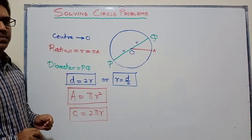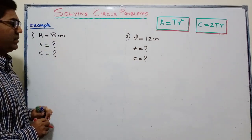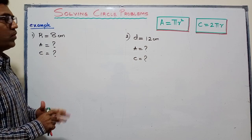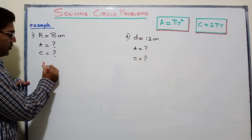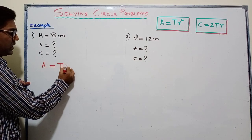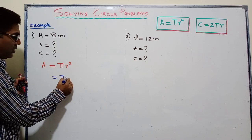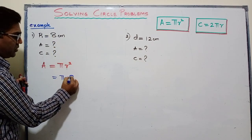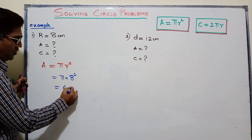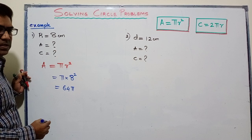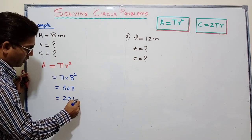Example 1: the radius of the circle is given as 8 cm. The question is to find the area and circumference. Always make a habit of writing the formula first. Area equals πr². We will take the calculator value of π. Radius is 8, so substitute: π × 8² = π × 64 = 64π. Put this value in the calculator and we get 201.06.